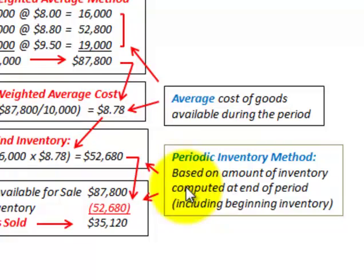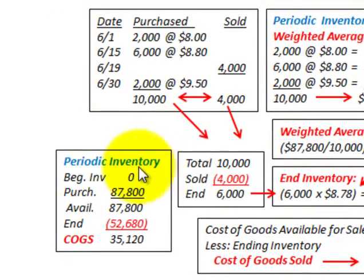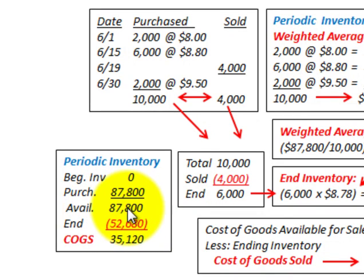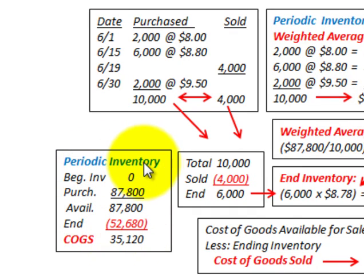The periodic inventory method is based on the amount of inventory computed at the end of the period, including any beginning inventory. To refresh our memory: in periodic inventory, you have beginning inventory — in this example it's zero, but you'd include any beginning inventory — plus purchases for the period. That gives you goods available to sell. Subtracting out ending inventory gives you the cost of goods sold for the period.